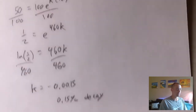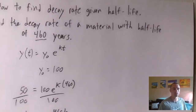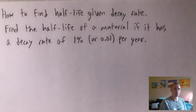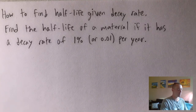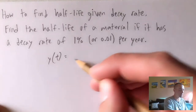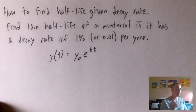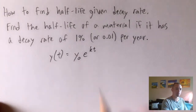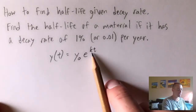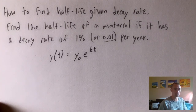Now I also want to show you how to find half-life given a decay rate — the other direction. We're going to find the half-life of a material if it has a decay rate of 1%, or 0.01 per year. We're still going to use the same formula: y(t) = y₀ · e^(kt). But here, what we're looking for is the half-life, so t is what we're solving for. We're given that k = −0.01, because it's a decay rate.